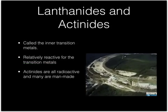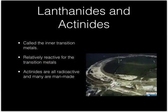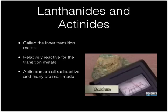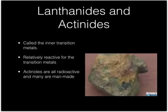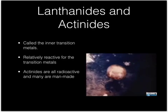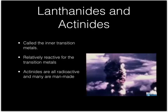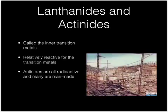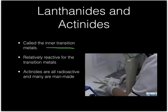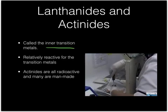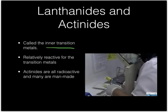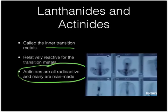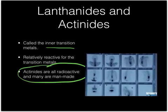Taken out of the transition metals and placed below the periodic table are the lanthanides and actinides, beginning with the elements lanthanum and actinium. These would actually go in periods 6 and 7, but for convenience we place them below the table. Commonly called the inner transition metals, they're pretty reactive. The actinides are radioactive and many are man-made, not found naturally.